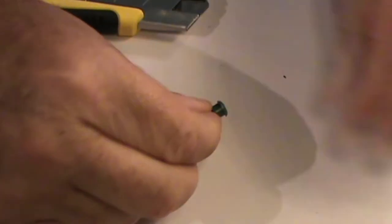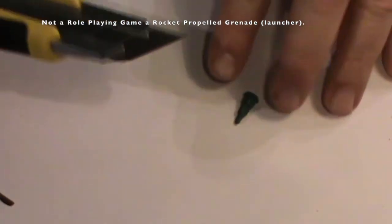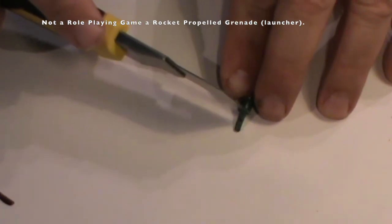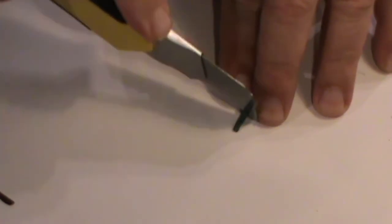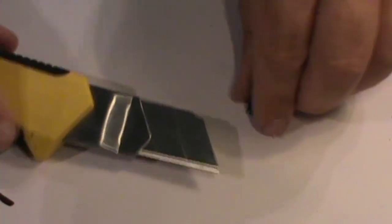This first piece is going to be an RPG. I'm taking the end of these old Christmas lights and cutting off the very end, and then I'm going to attach it to a thin piece of dowel.